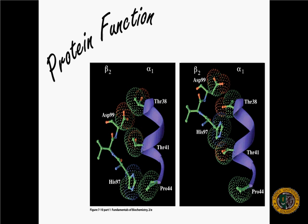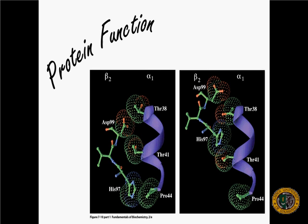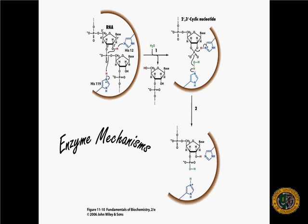The higher ordered structures — secondary, tertiary, and quaternary — contribute to the function of the protein by bringing particular residues together. And we will be looking at hemoglobin in particular as an example of how proteins function.